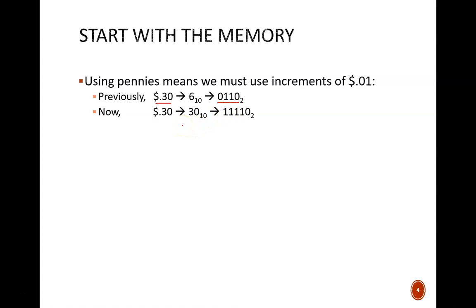Now, each money amount must be represented directly in binary. So, 30 cents would be 11110.